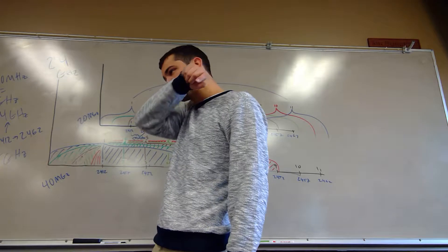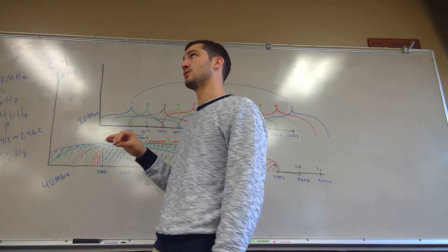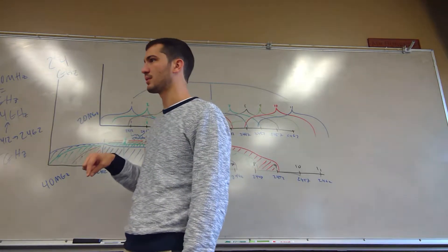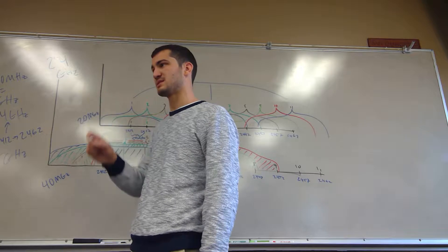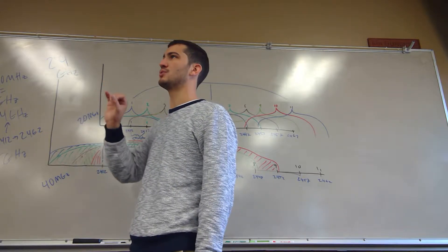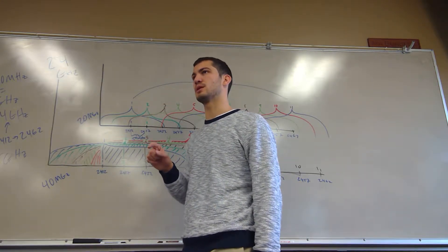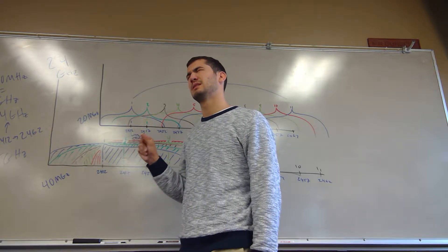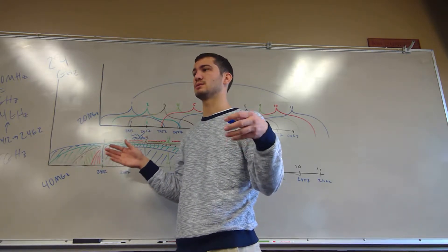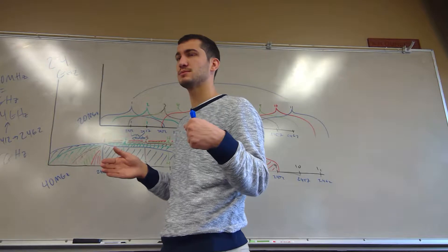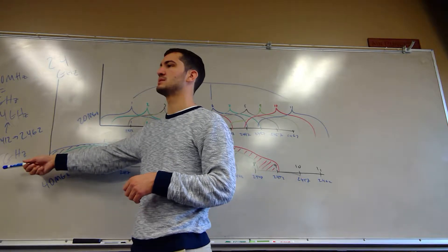It depends on the standard. 802.11a is 5 gigahertz at 11 megabits per second. 802.11b is 2.4 gigahertz at 54 megabits per second. 802.11g is also 2.4 gigahertz at 54 megabits per second. 802.11ac, which was discussed a couple weeks ago, can do up to 160 megabits per second — but those are maximum theoretical values, not typical speeds.